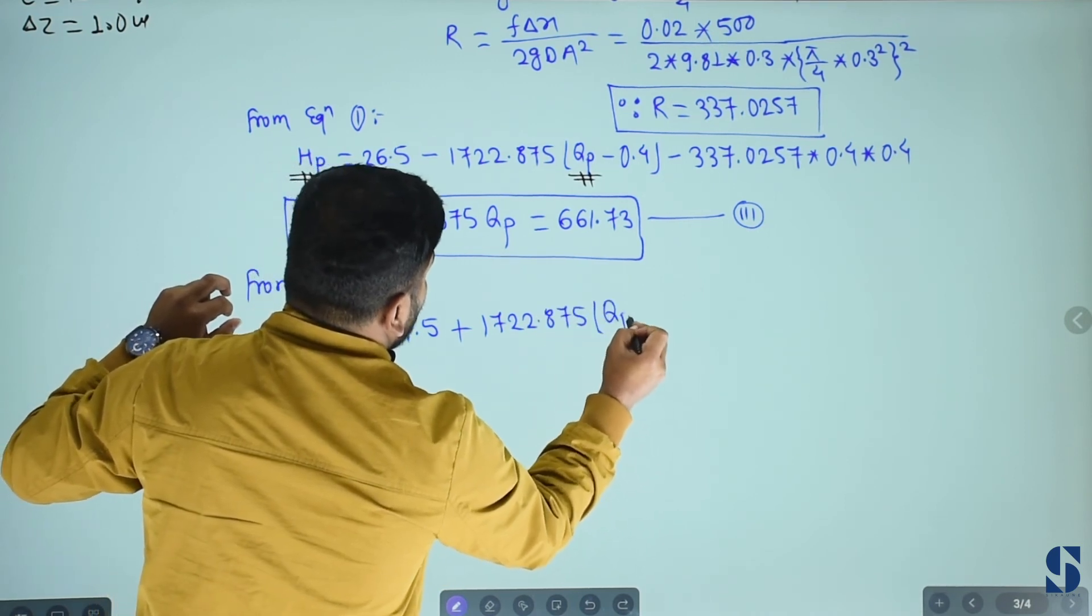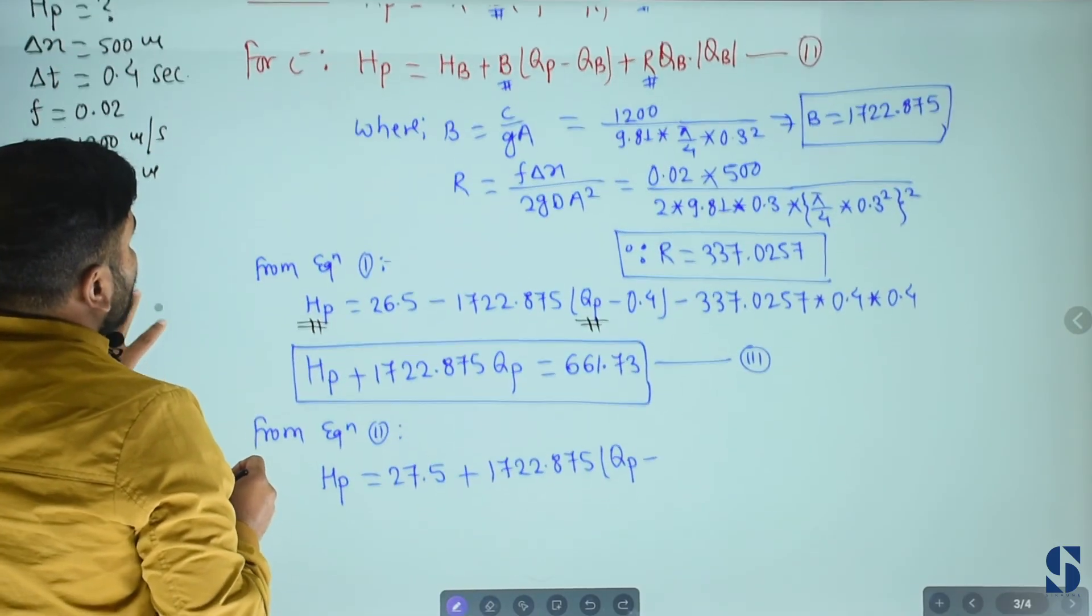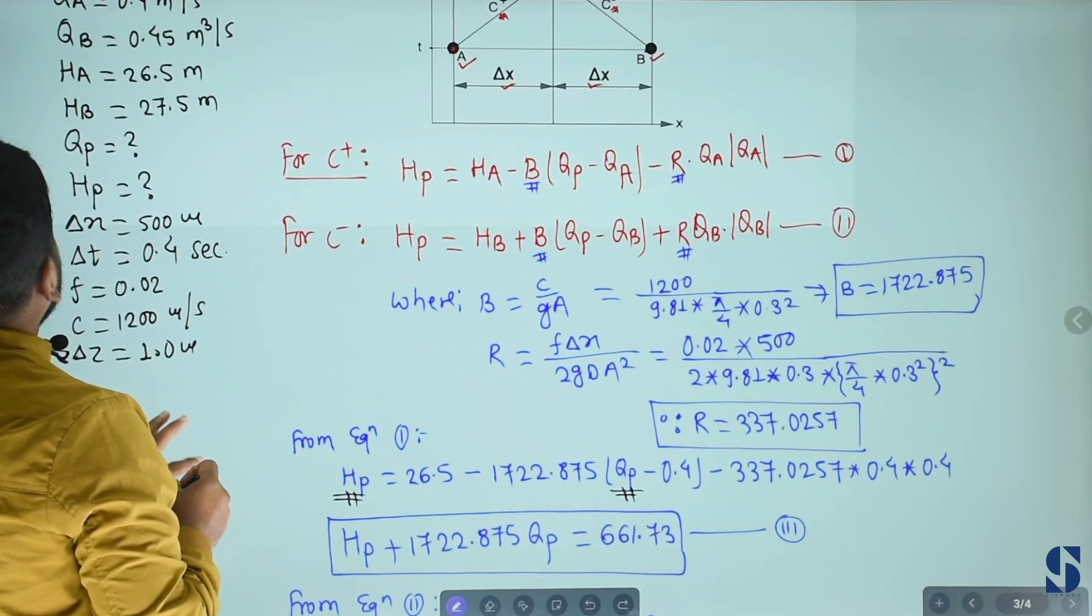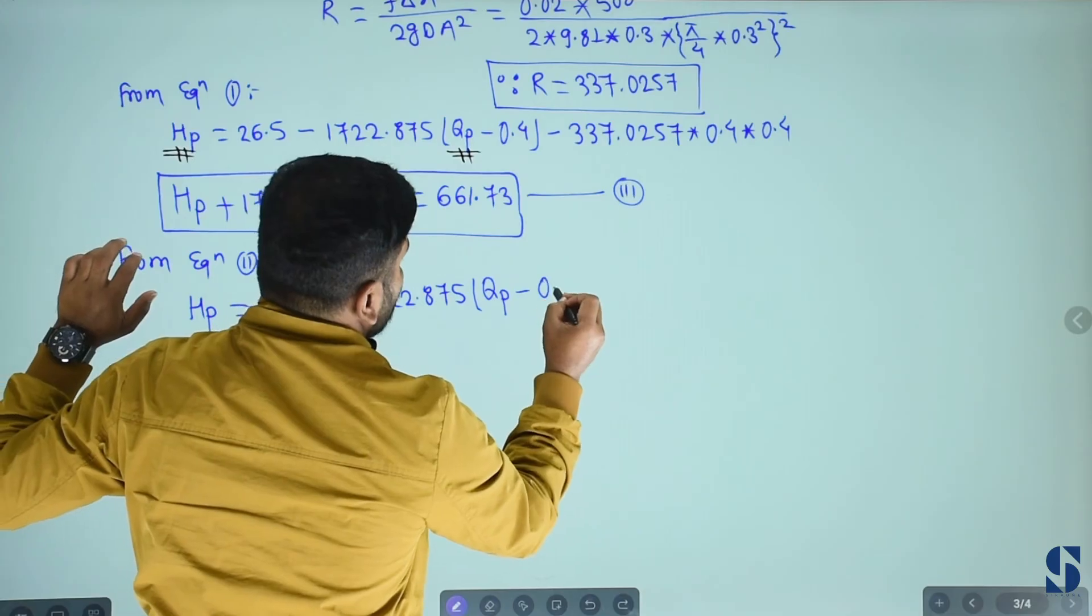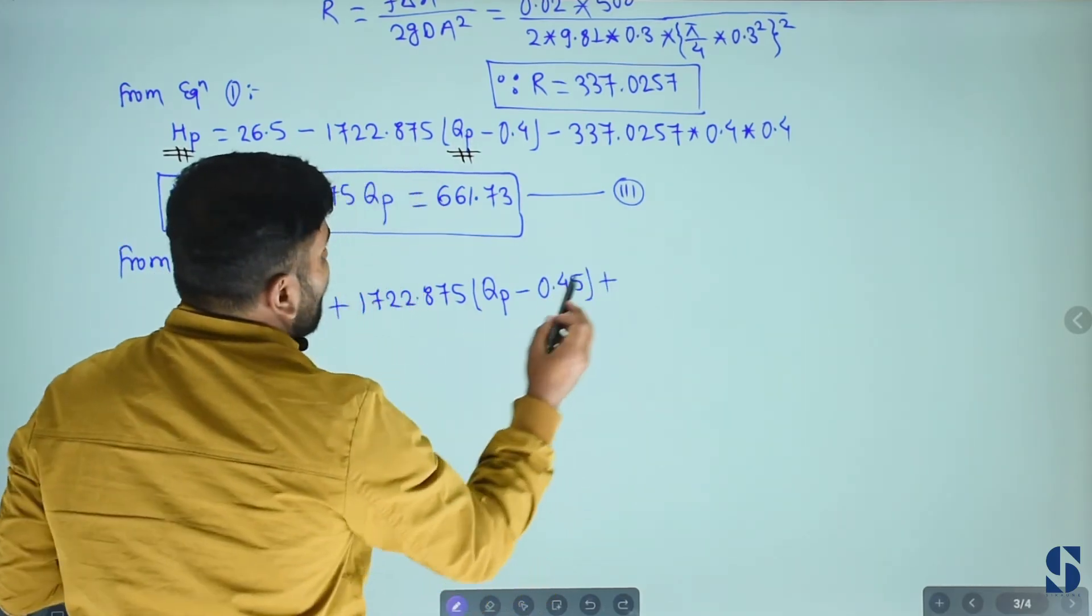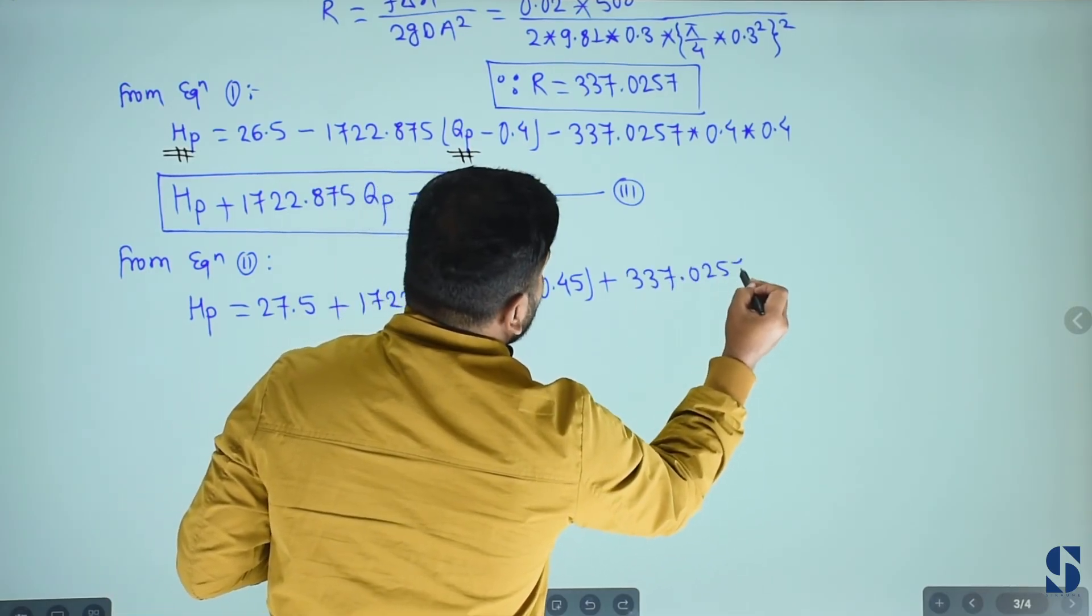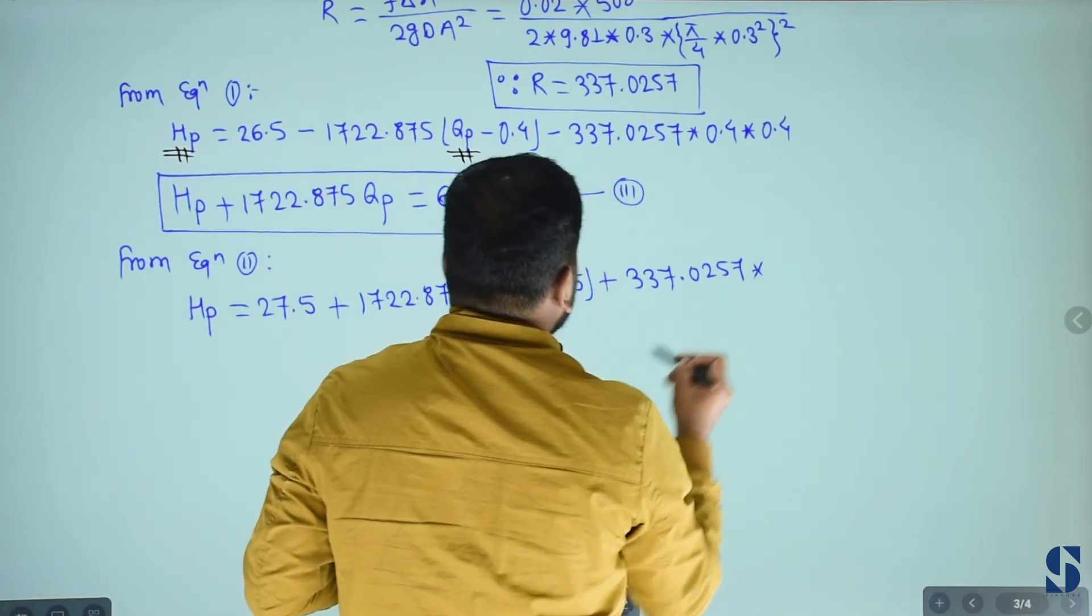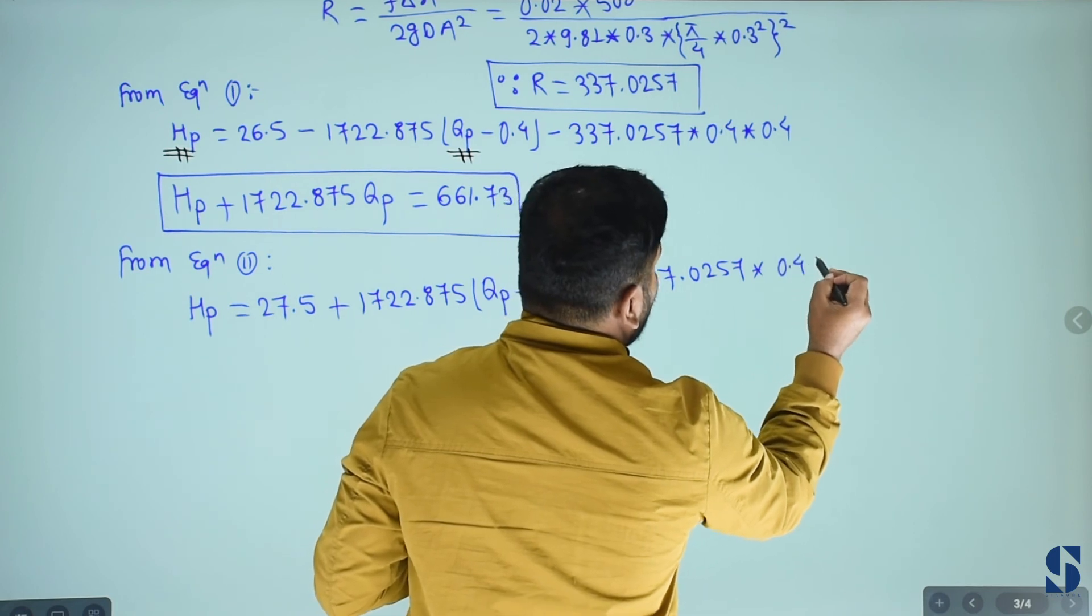QP minus QB. QP minus QB, where QB is 0.45, plus 337.0257 times QB. QB equals to 0.45.